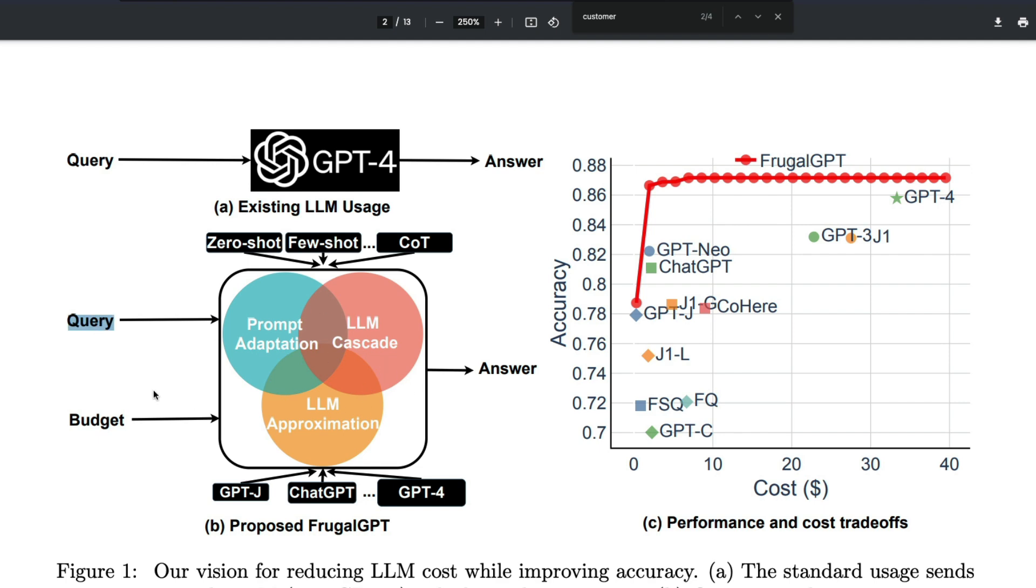What FrugalGPT proposes is you do not have to literally take the query from the user and send it to the models. Rather, you can do something—that's exactly what prompt adaptation is. And you don't have to literally use the existing GPT-4 in the first place; you can use a combination of multiple models, and that's exactly what the LLM cascade is going to help us.